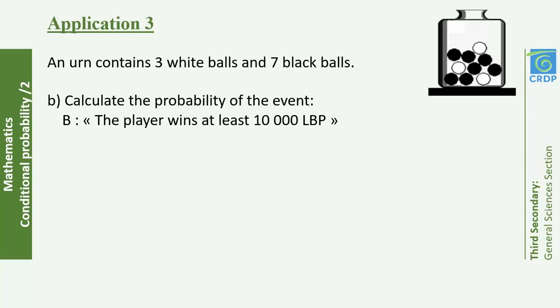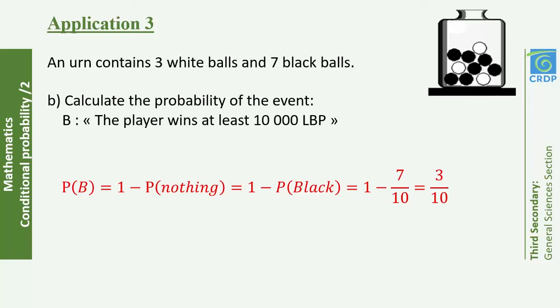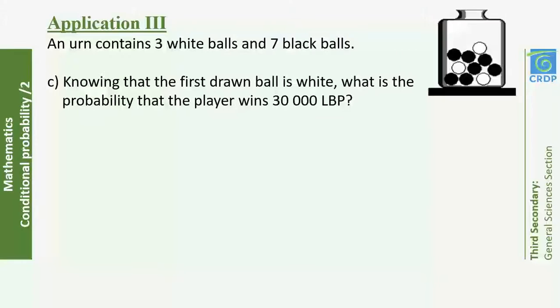Part B: Calculate the probability that the player wins at least 10,000 Lebanese pounds. It's easier to use the complement — the player wins nothing only when the first ball drawn is black. P(nothing) = 7/10. Therefore P(B) = 1 − 7/10 = 3/10.